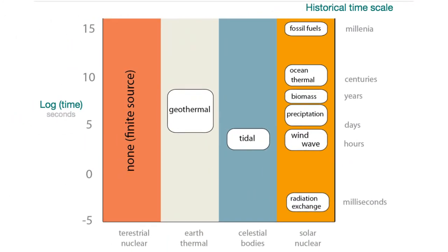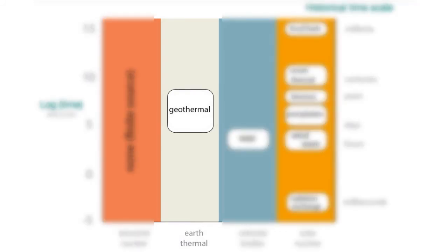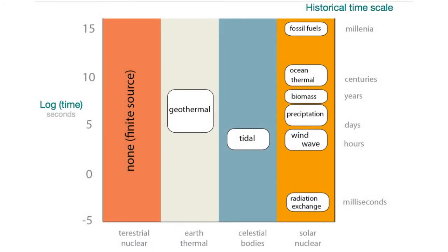So the four stable resources are terrestrial nuclear, which is essentially the radioactive material that was formed when the Earth was formed. There's Earth thermal energy, which comes in an expression of geothermal energy.